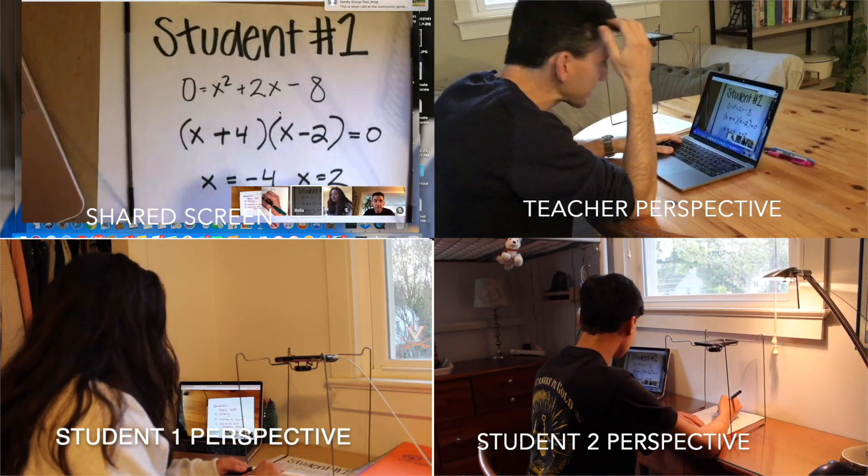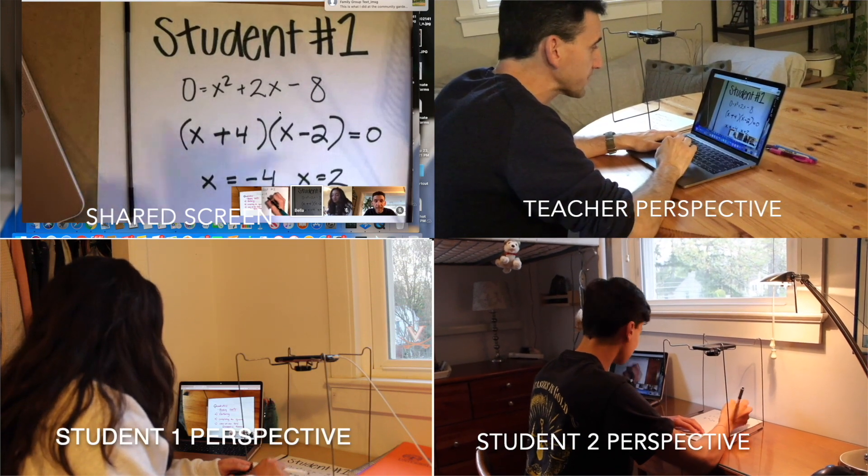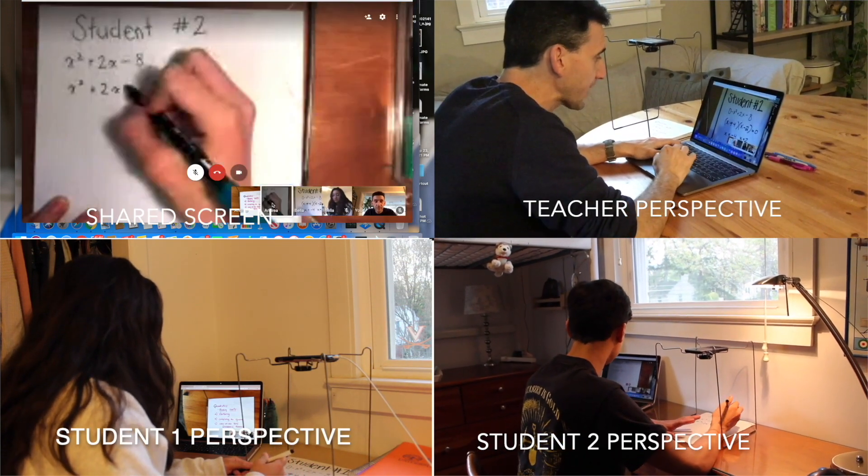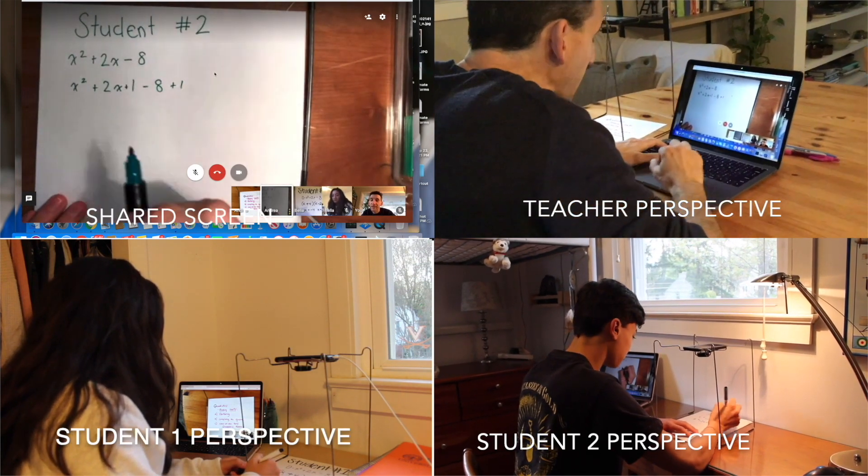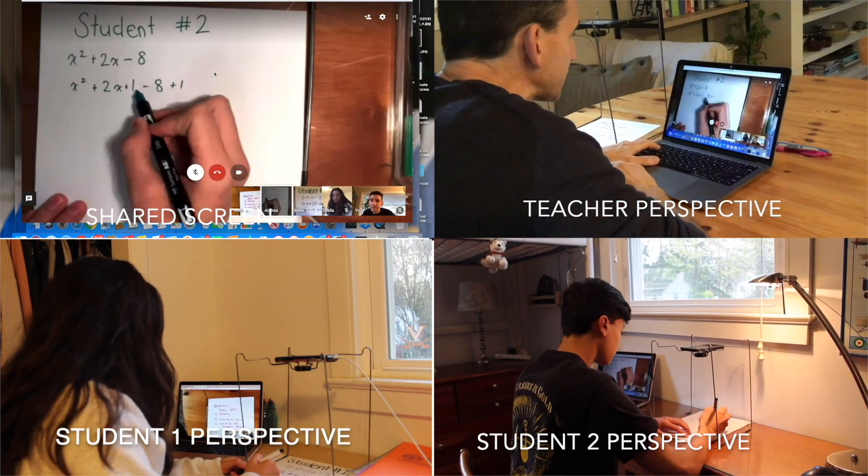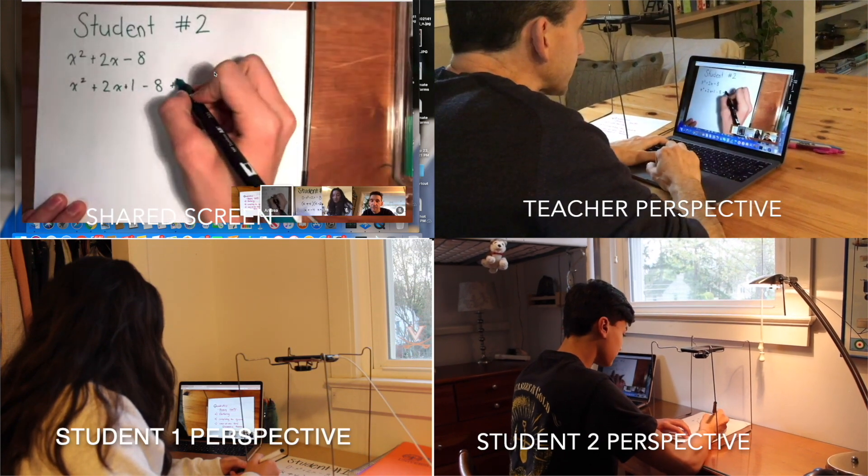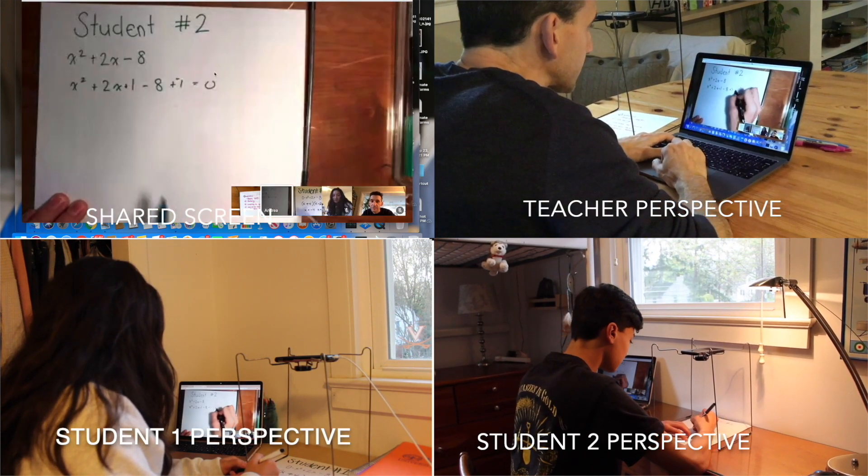Josh, can you go ahead and show us another way to solve the same problem to get the roots of x squared plus 2x minus 8? Set that to zero. From here you can complete the square and simplify these two terms.